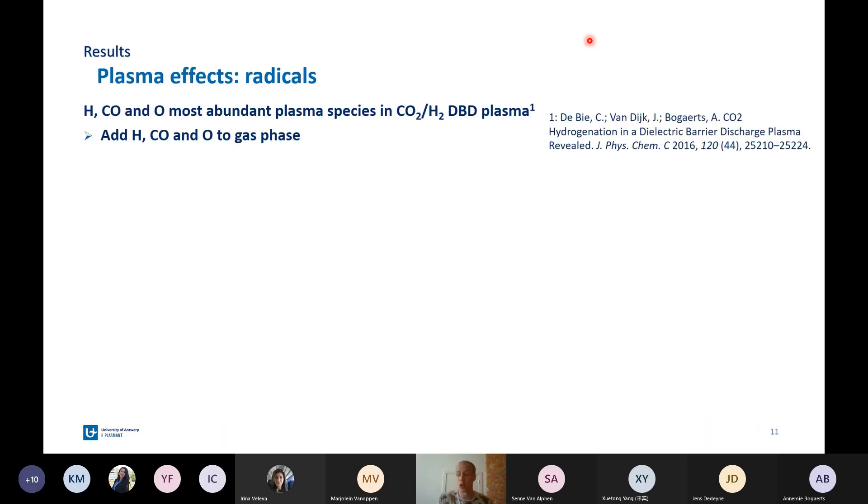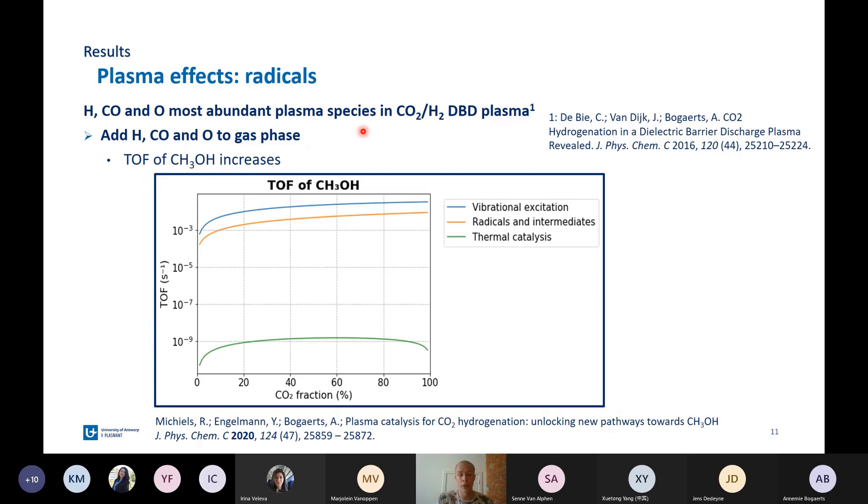When we look at the effects of one kind of plasma species, namely the radicals, to investigate these we are going to add hydrogen, carbon monoxide, and oxygen to the gas phase, because these are the most abundant species in a typical CO2-H2-DBD plasma. When we add them, we see that the turnover frequency of methanol increases. The green line is the turnover frequency of methanol for thermal catalysis. The orange line is the turnover frequency for when you add the radicals and intermediates to the gas phase. You can clearly see that it's higher.